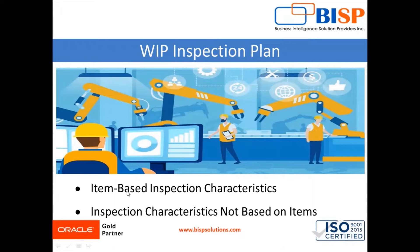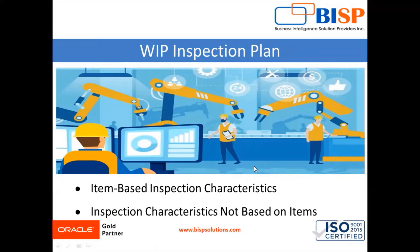The first type is item-based inspection characteristics. You can link item-based inspection characteristics with attribute values in an item class. This enables you to verify if an item meets the required product specification. Item-based inspection characteristics generally have a range of acceptable values or specification limits. These are typically used for manufacturing but may be used for maintenance applications as well.